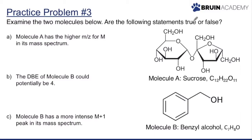The last problem asks us to answer true or false questions. We have two molecules: sucrose (A) and benzyl alcohol (B). Part A says molecule A has a higher m/z for M in its mass spectrum. Since m/z represents molecular weight, and sucrose has more carbons, hydrogens, and oxygens than benzyl alcohol, its molecular weight is higher. This is true.